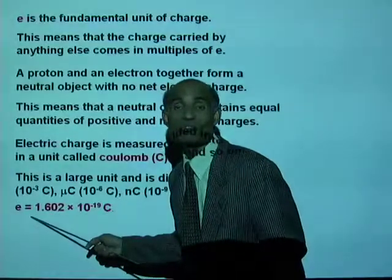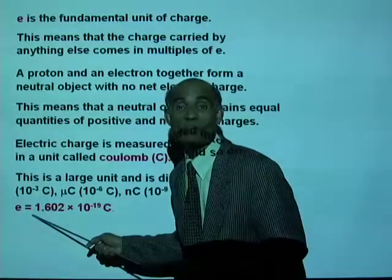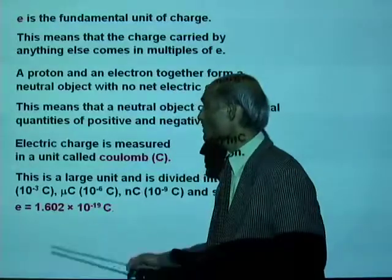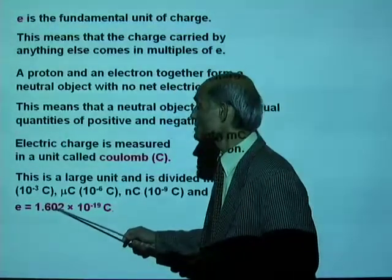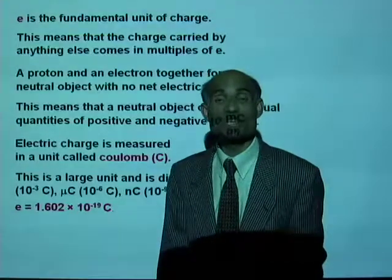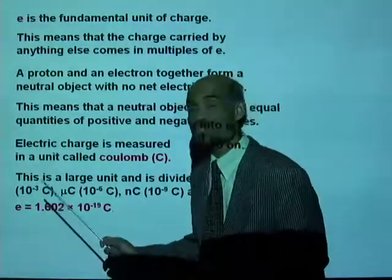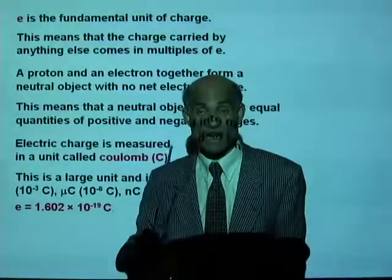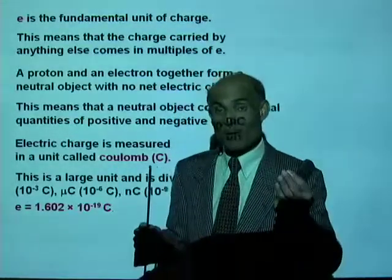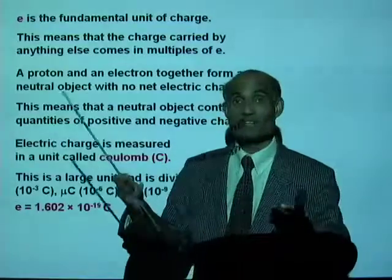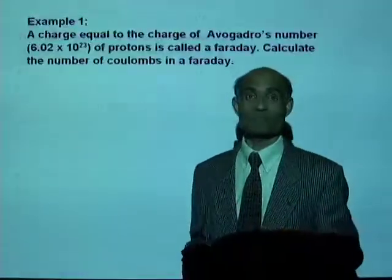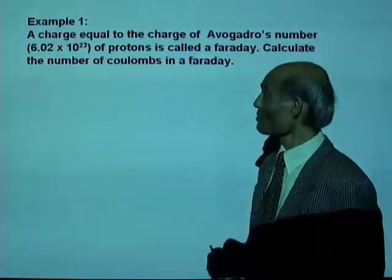The value of the fundamental unit of electric charge is E = 1.602 × 10⁻¹⁹ coulombs. This is the charge carried by an electron and also a proton. The charge carried by the electron is negative and the charge carried by the proton is positive. Let's do a small problem.